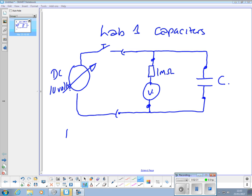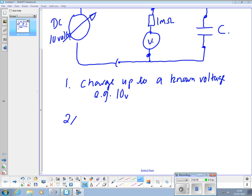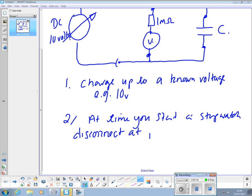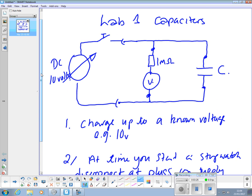So what you'll do is, one, charge up to a known voltage, e.g. 10 volts. And then two, at time you start a stopwatch, disconnect at the plugs on supply. I.e., when you start going, what you want to do is you only need to take one out, but you need to go like that and take that out.